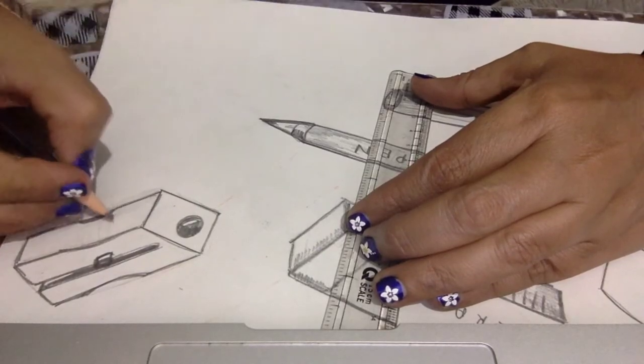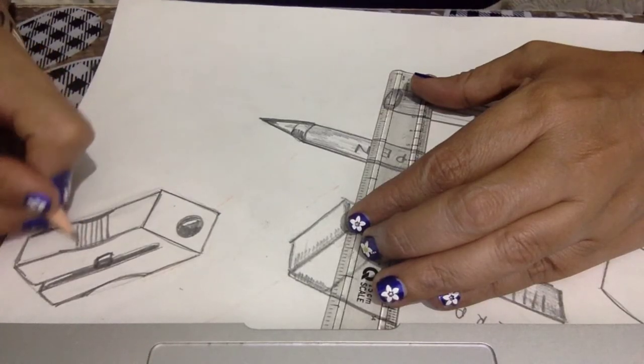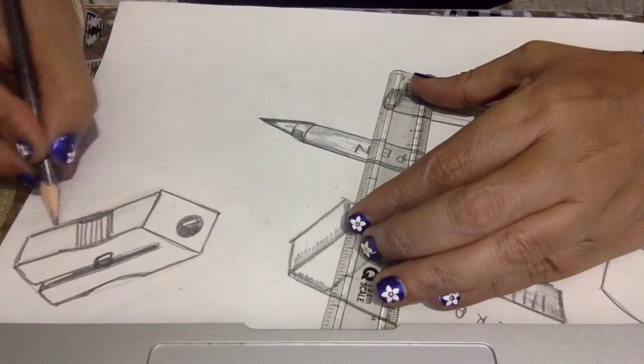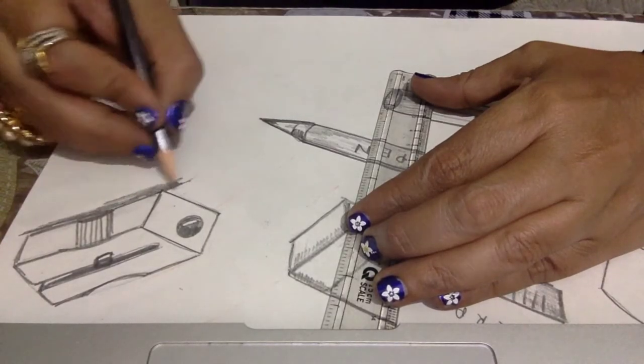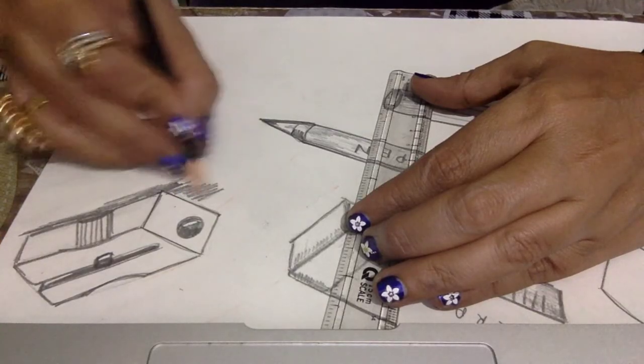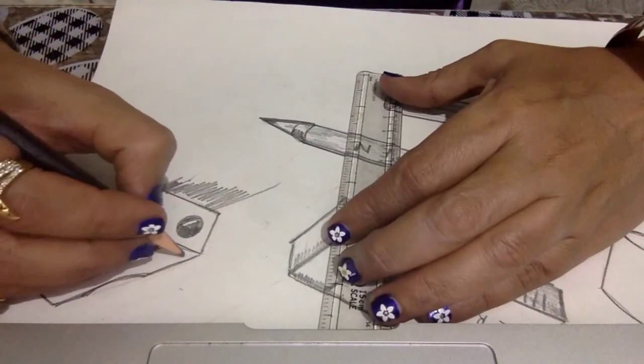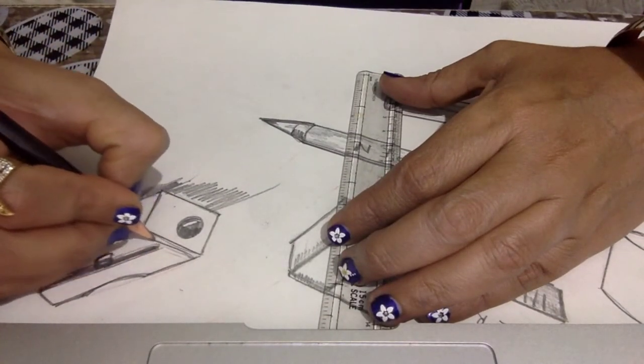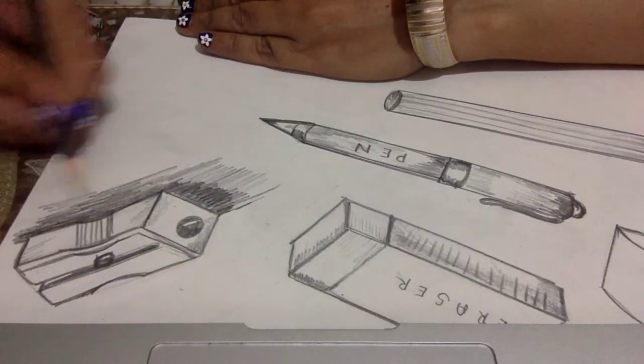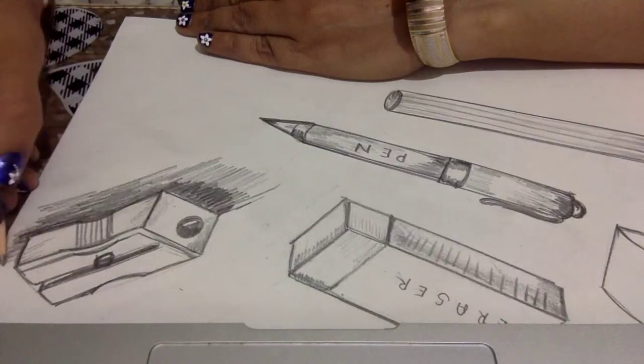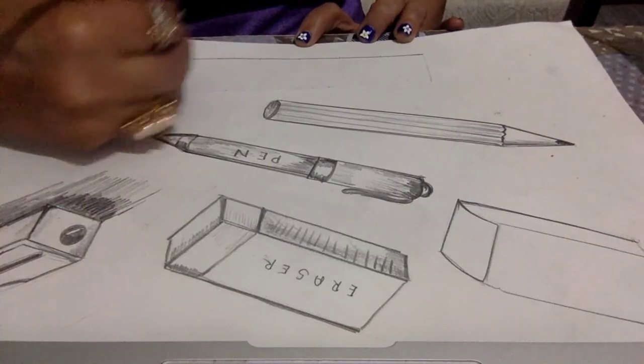Give some shading also. Here, I am only using a shading pencil for the shading of the object. Next, give shadow if required, give shading all over to give the realistic form of the sharpener.